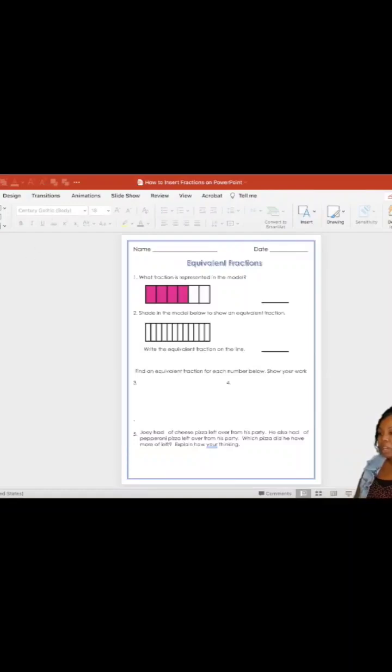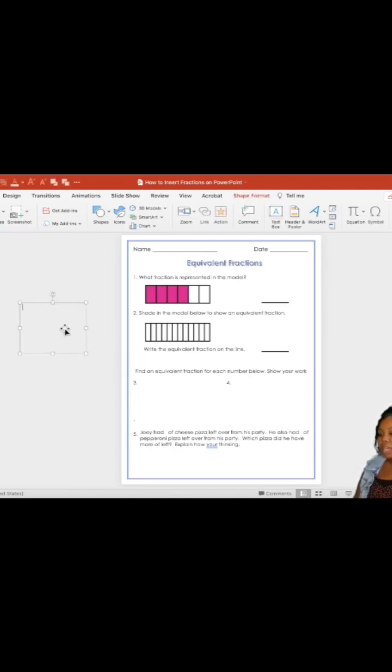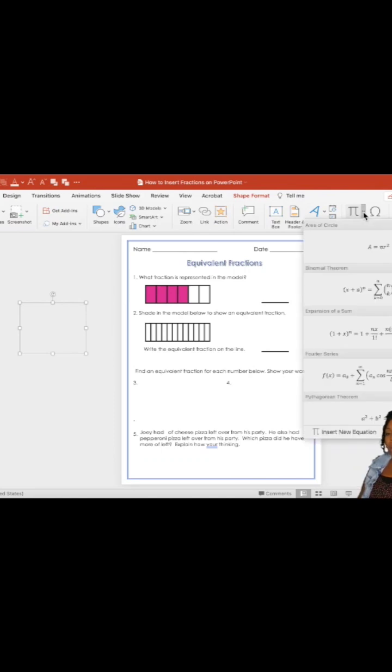Start out by going up to the ribbon, going to the Insert tab, going over to where it says text box, and then creating a new text box. In that text box is where I'm going to insert my fraction. So go back up to the ribbon, all the way over to Equation, and click on that menu.